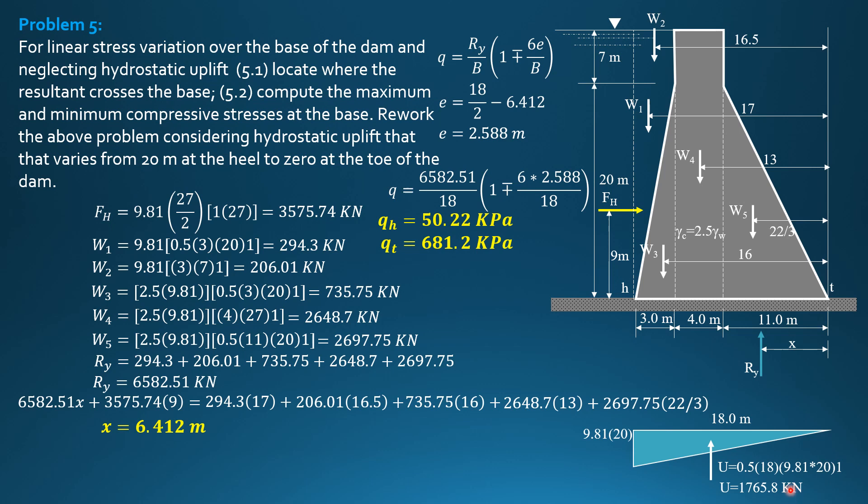So for considering uplift, R-Y is affected. R-Y prime, we'll call it R-Y prime. It is equal to 6582.51 minus 1765.8. The uplift force is acting from the toe, two-thirds of 18 is 12 meters from the toe. So R-Y prime is 6582.51 minus uplift 1765.8. So R-Y prime is 4816.71 kilonewtons.